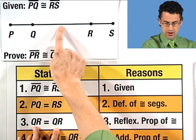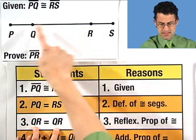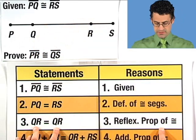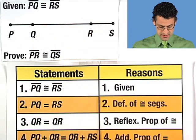QR is equal to QR. That length, the length of this line segment is equal to itself. That's the reflexive property of congruence. So of course we know that. So that's good.